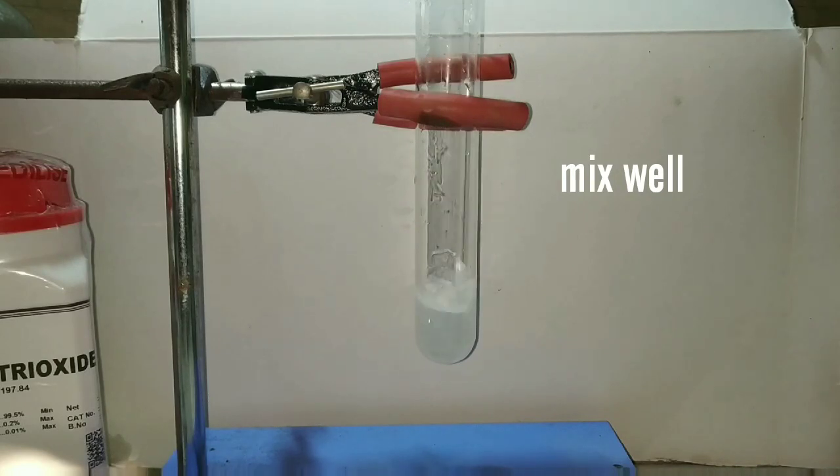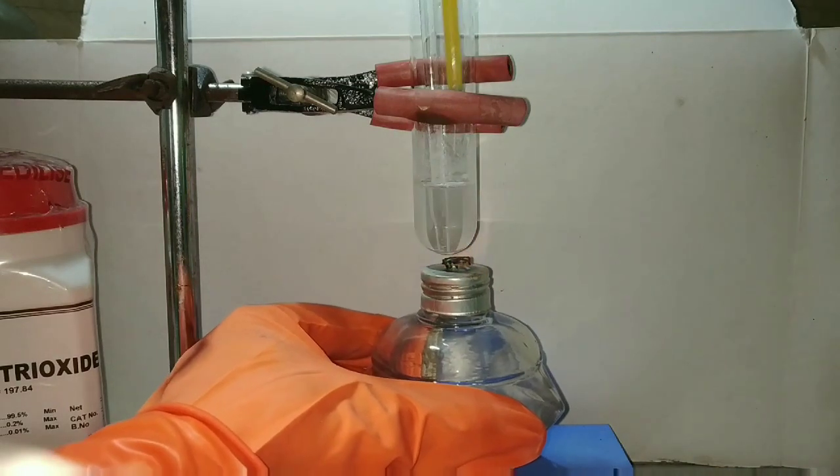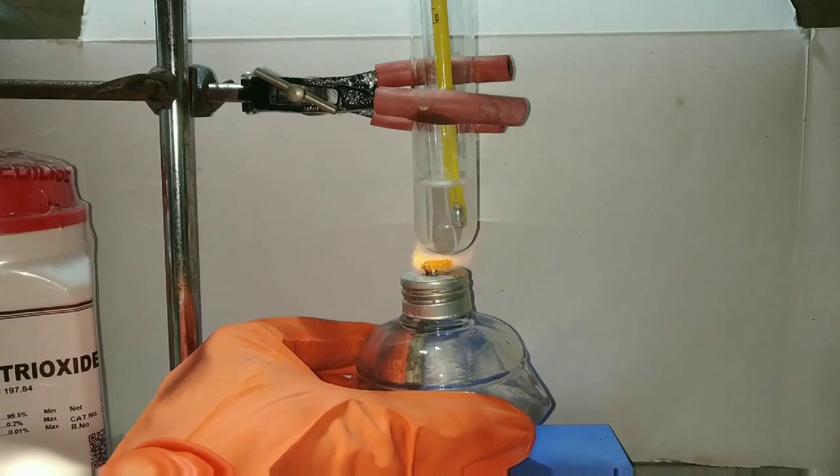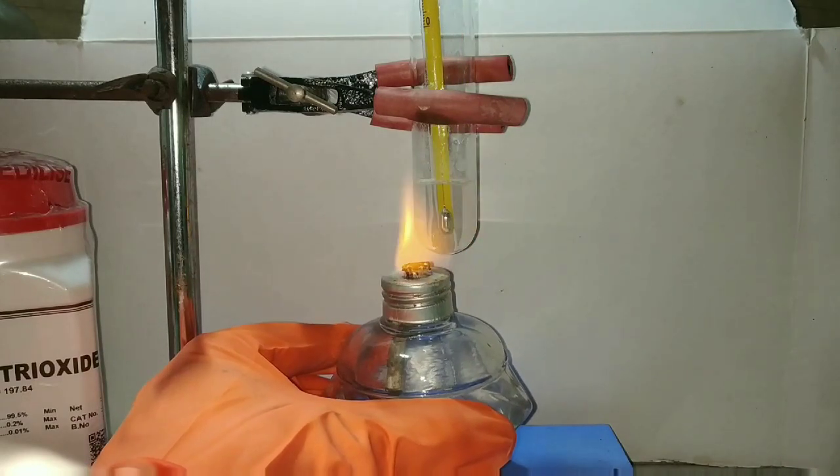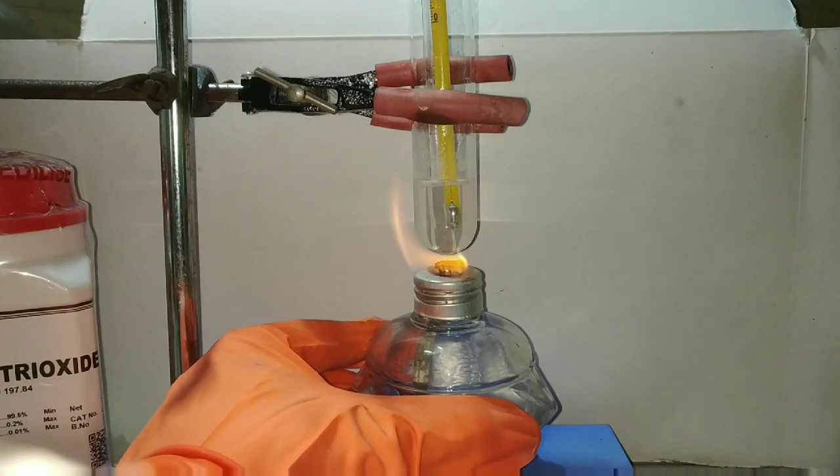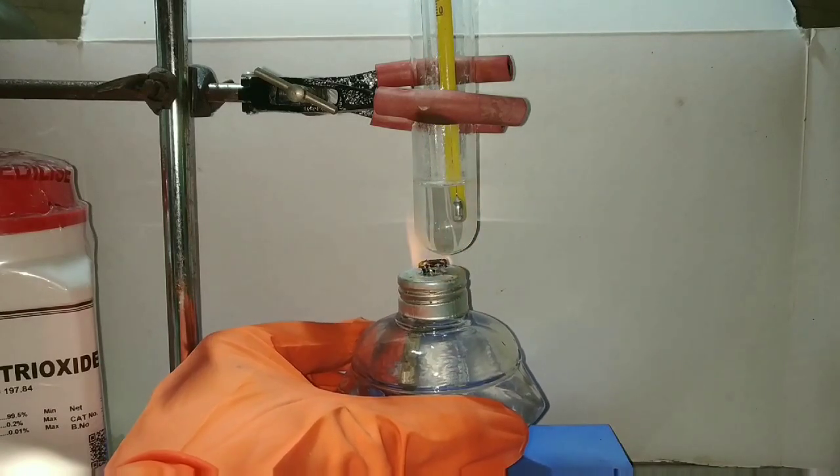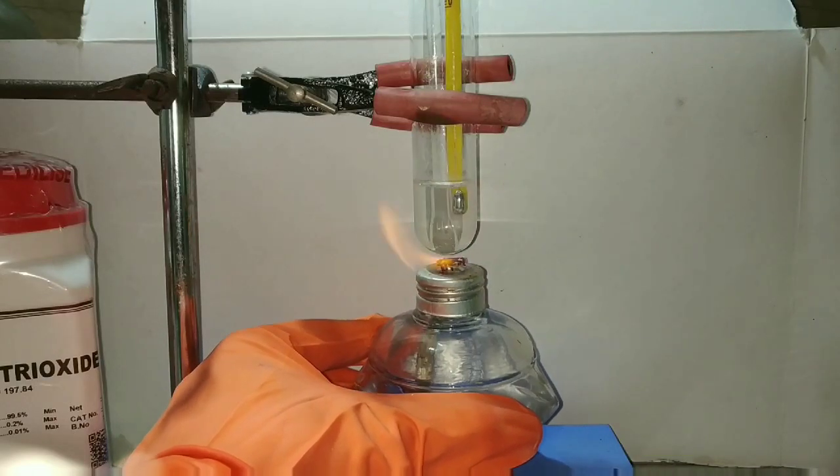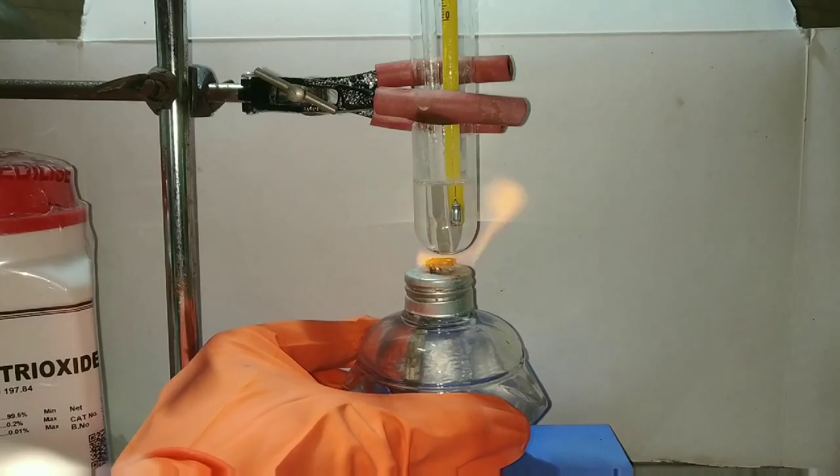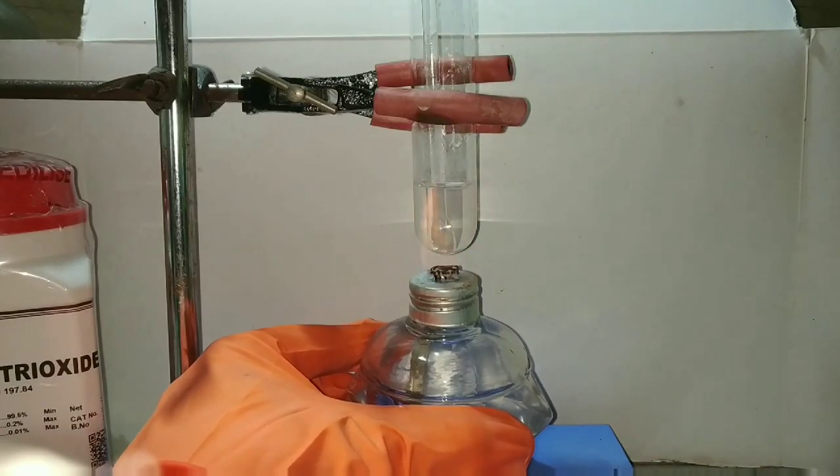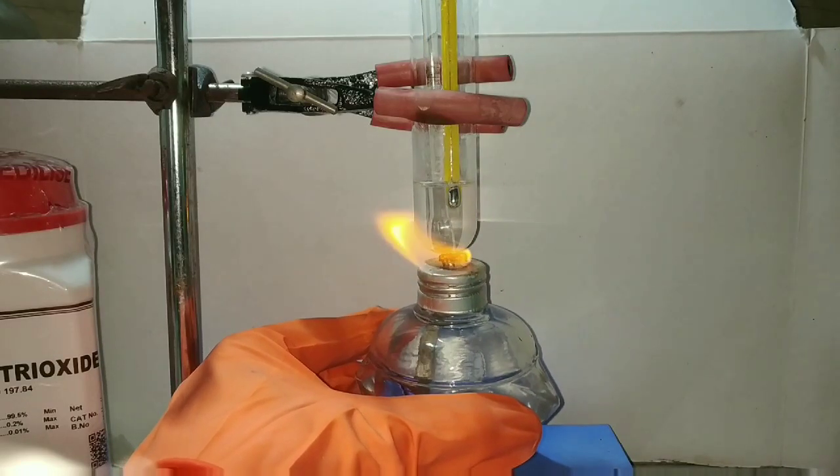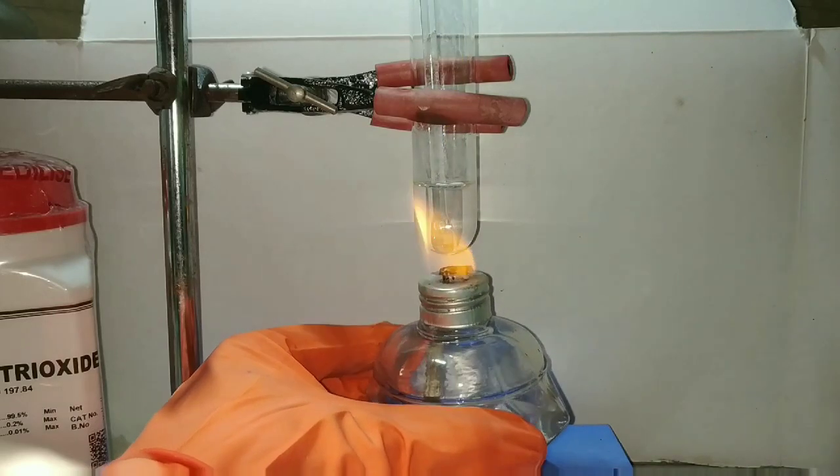Now we will mix the contents thoroughly. The temperature required for this reaction to take place is around 90 degrees, so we will be heating the contents and recording the temperature. You can observe that the contents are turning clear, which means that the arsenic trioxide has completely reacted with the sodium carbonate and the temperature now reads around 90 degrees. So we will stop the heating process.